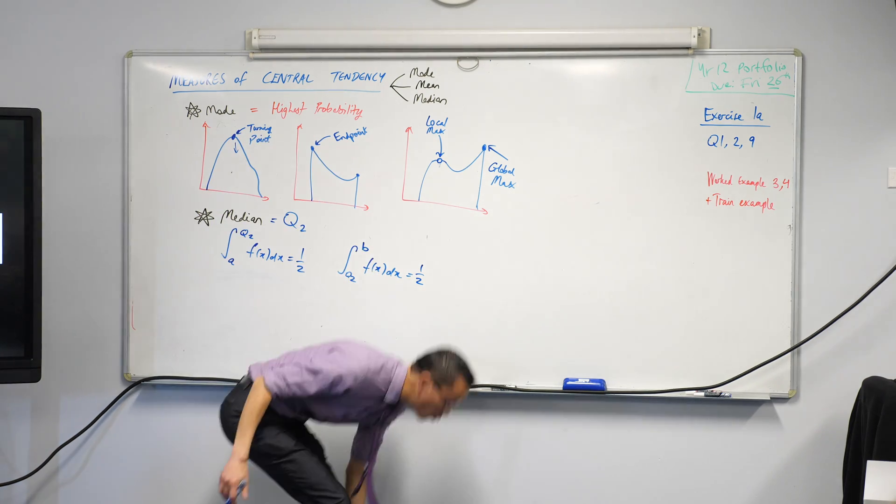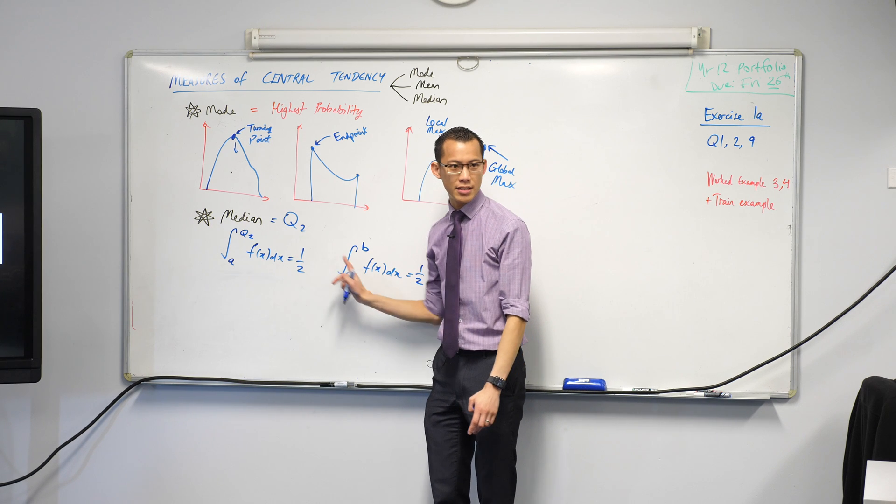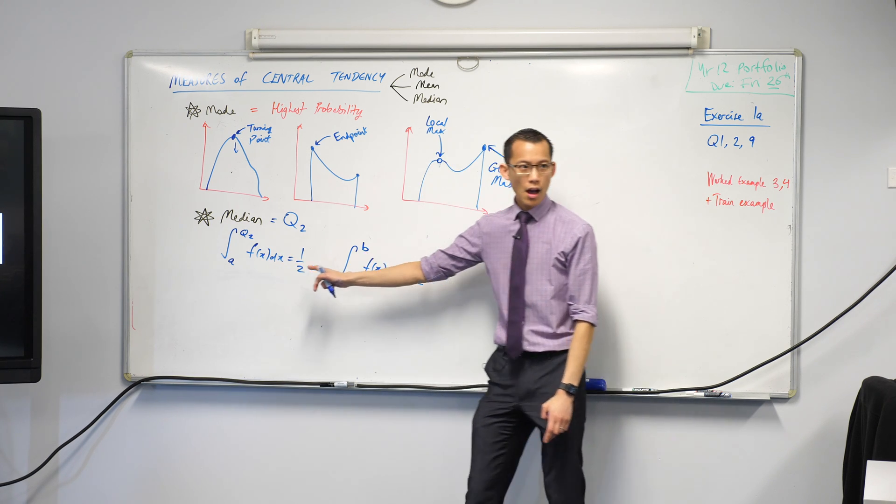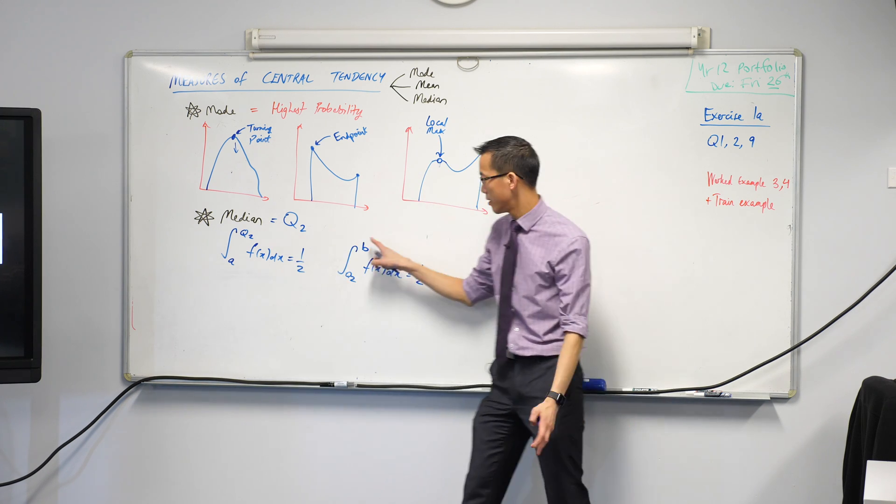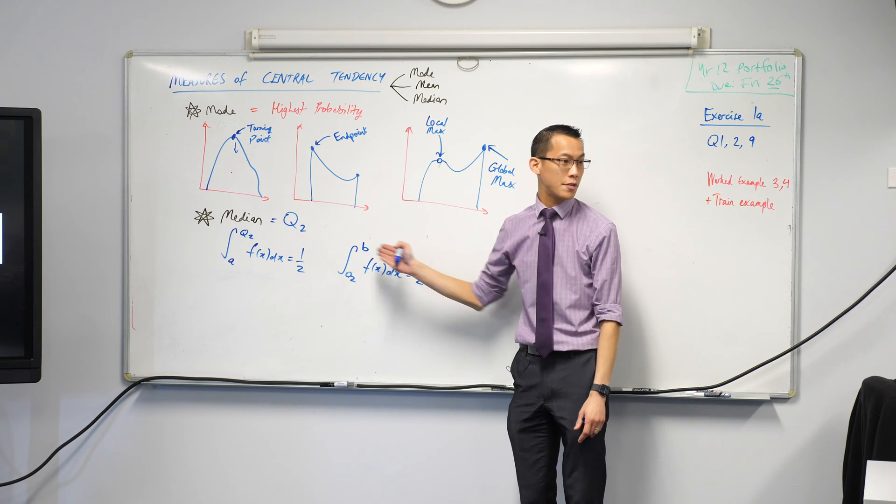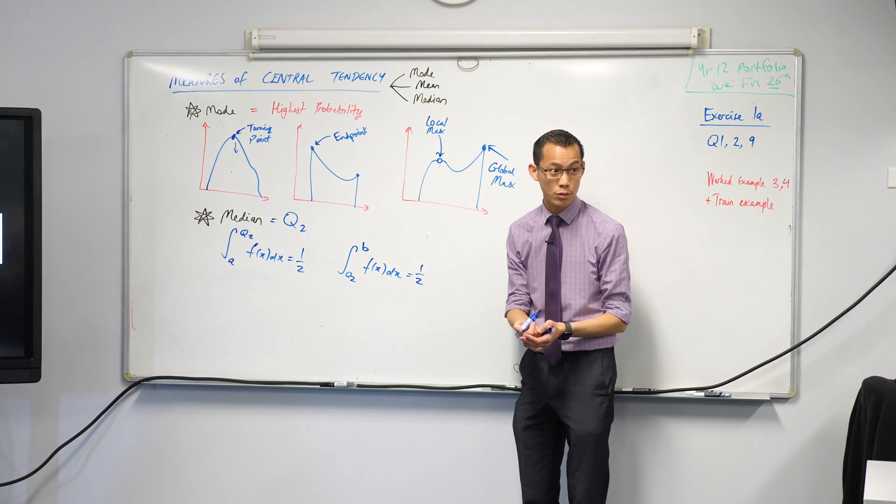Now, if I'm trying to find what Q2 is, I will be given my probability density function. I'll be given boundaries, like what's your shortest person, what's your tallest person, and then I can use either of these integrals to then work out Q2. Can I give you an example?